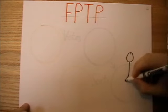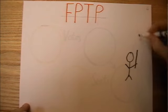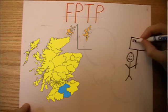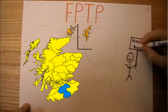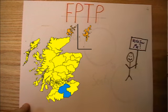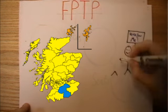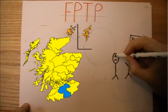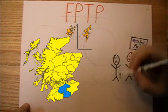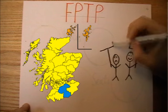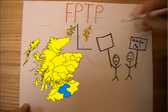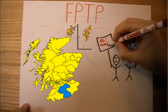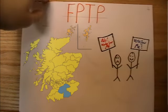Let's start with first past the post — which we won't shorten to FPTP, because that just takes longer to say. This is the system used for the UK Parliament, where the country is divided up into constituencies, and the people in that constituency each get one vote for who they would like to represent them. There is one candidate from each political party, plus some independents, and whoever gets the most votes is elected to represent the constituency in parliament.